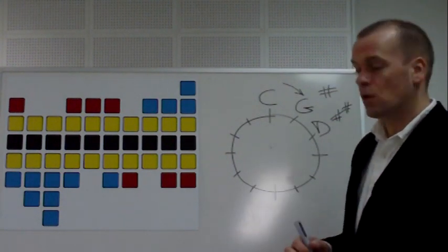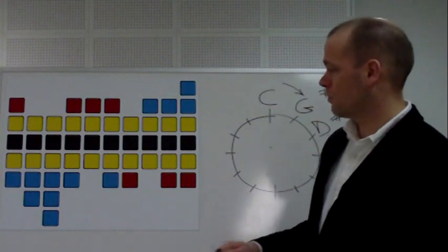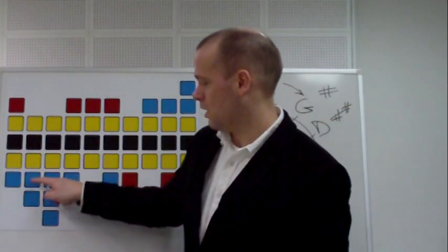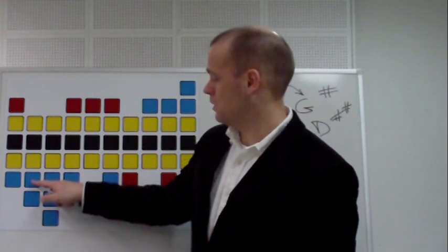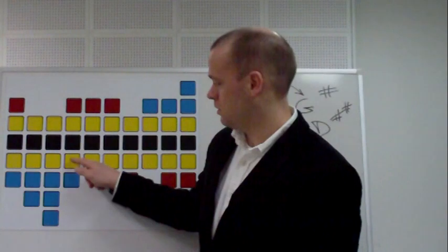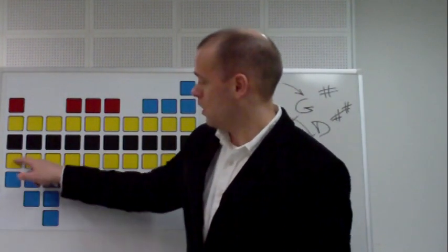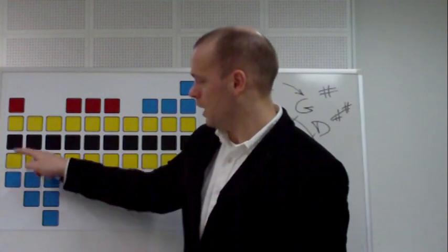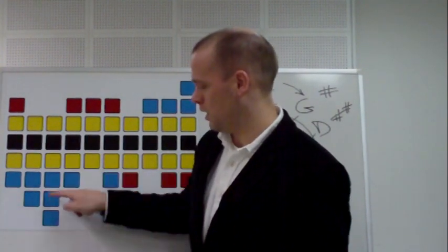For now I'll just quickly go through a few keys. From D, we have D, E, F sharp, G, A, B, C sharp, D. So the fifth from that is 1, 2, 3, 4, 5: D, E, F sharp, G, A.